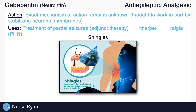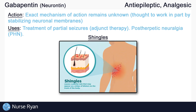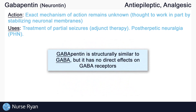Gabapentin is also used in the treatment of postherpetic neuralgia, which is a fairly common complication of shingles. Postherpetic neuralgia may present as a painful burning or stabbing sensation which may continue long after the shingles rash and blisters go away. Gabapentin is structurally similar to the inhibitory neurotransmitter called GABA, where gabapentin gets its name from, but it has no direct effects on GABA receptors.